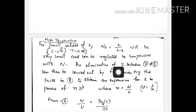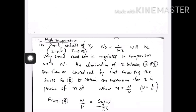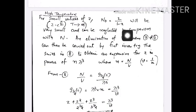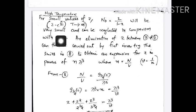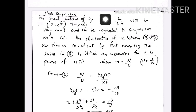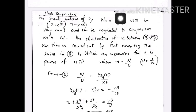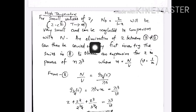Now let us consider the state of the gas at high temperature. For high temperature, the value of z will be very small because z equals e to the power mu/kT, and as temperature tends to infinity, z becomes very small. We know N0, the number of particles in the ground state, is given by z/(1 minus z). Since z is very small, 1 minus z is large, so N0 will be very small and can be neglected compared to the total N.